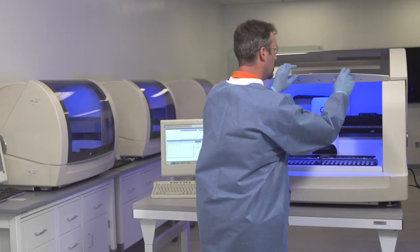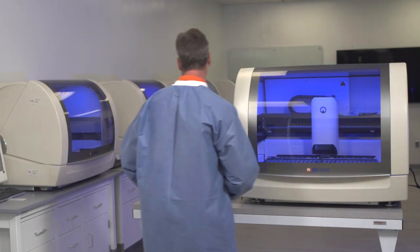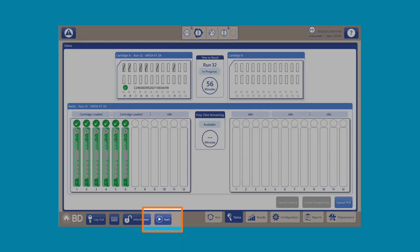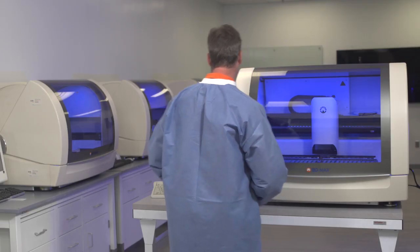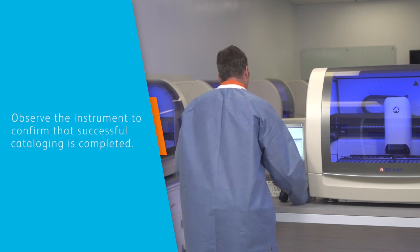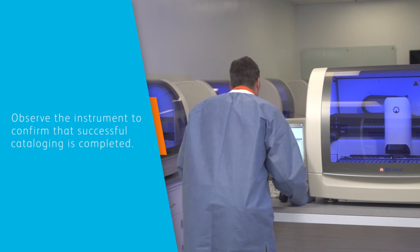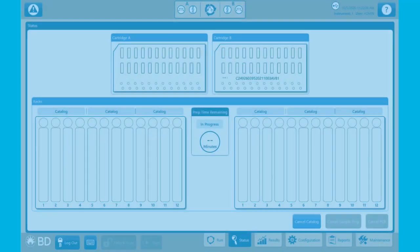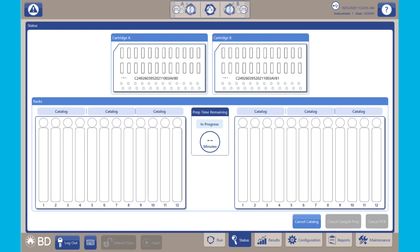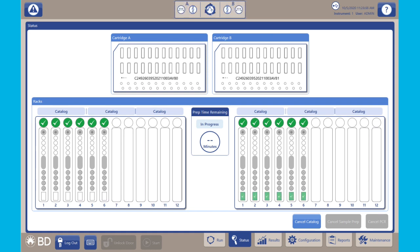Close the BDMAX System lid and click Start to begin the processing. As each item successfully passes the Catalog check, a green Passed icon appears for that consumable.